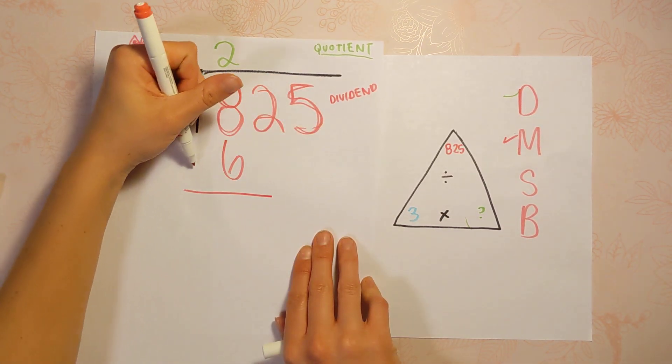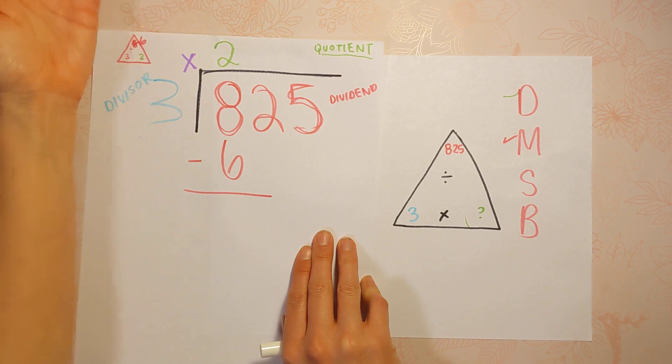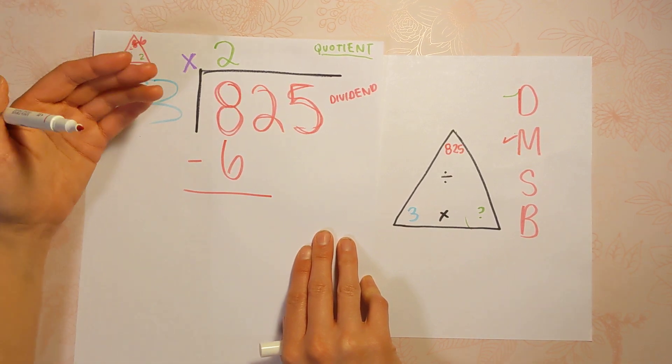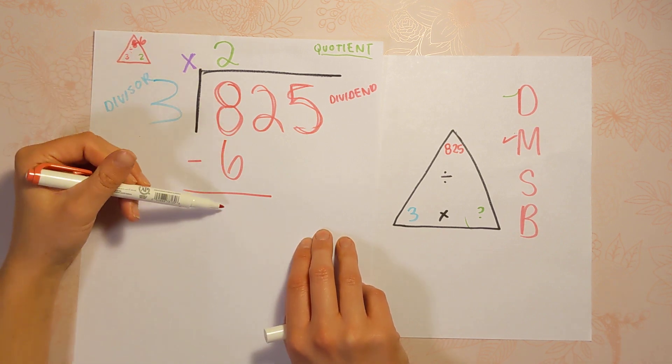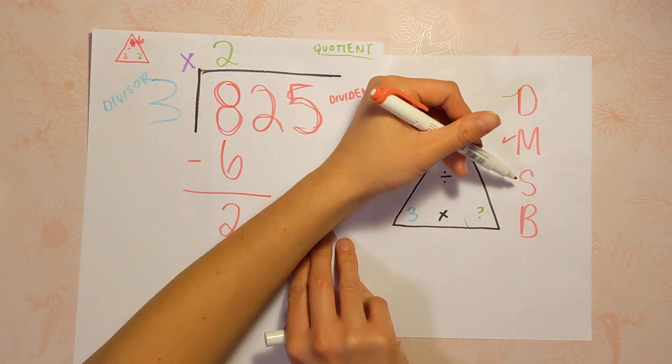That's this step. Good. Next step is subtract because we didn't get all the way up to 8. We only got up to 6. So you need to figure out how much further we have to go. So we're going to do 8 minus 6, which is 2. Great.